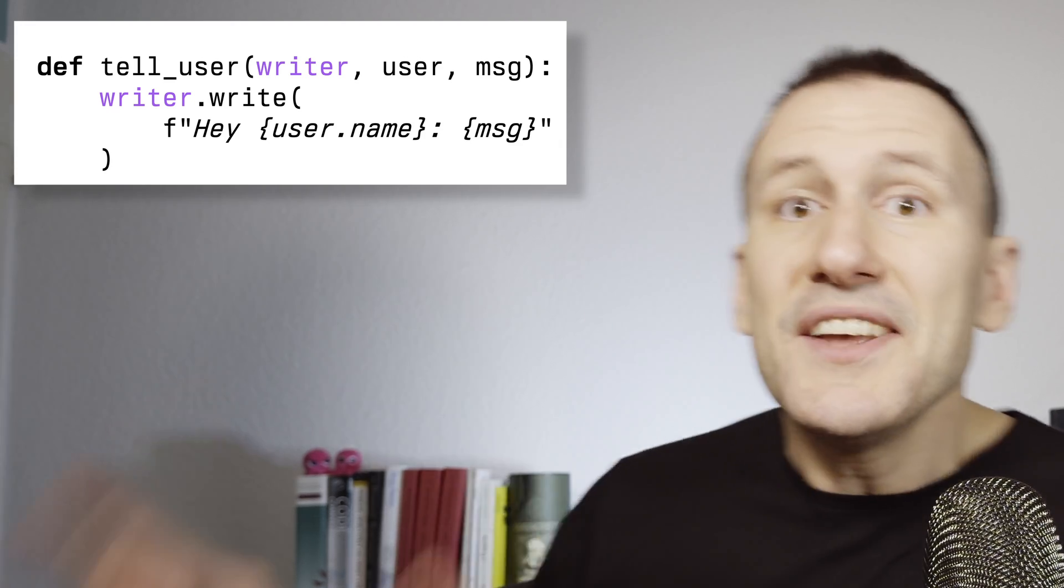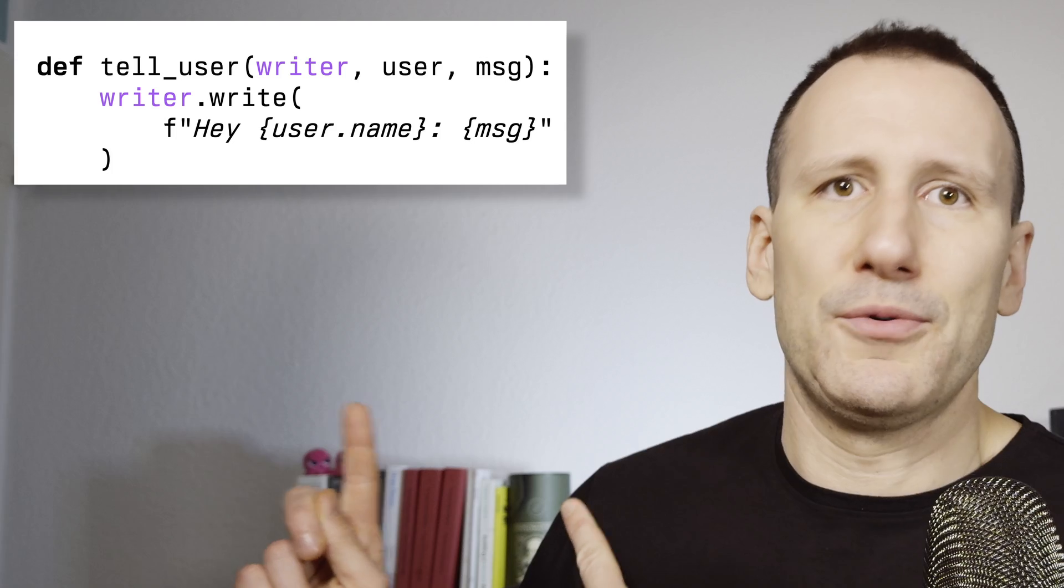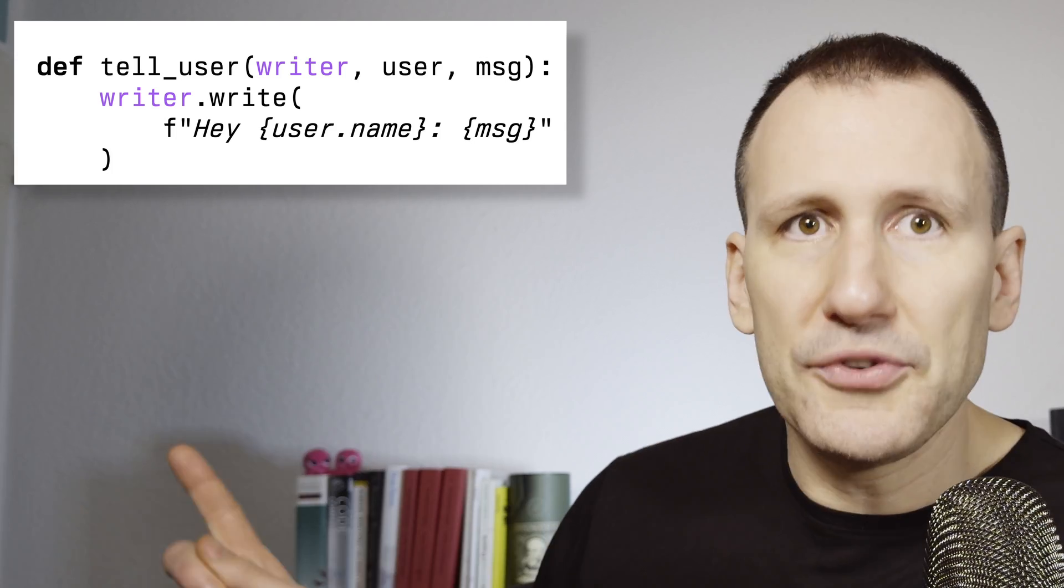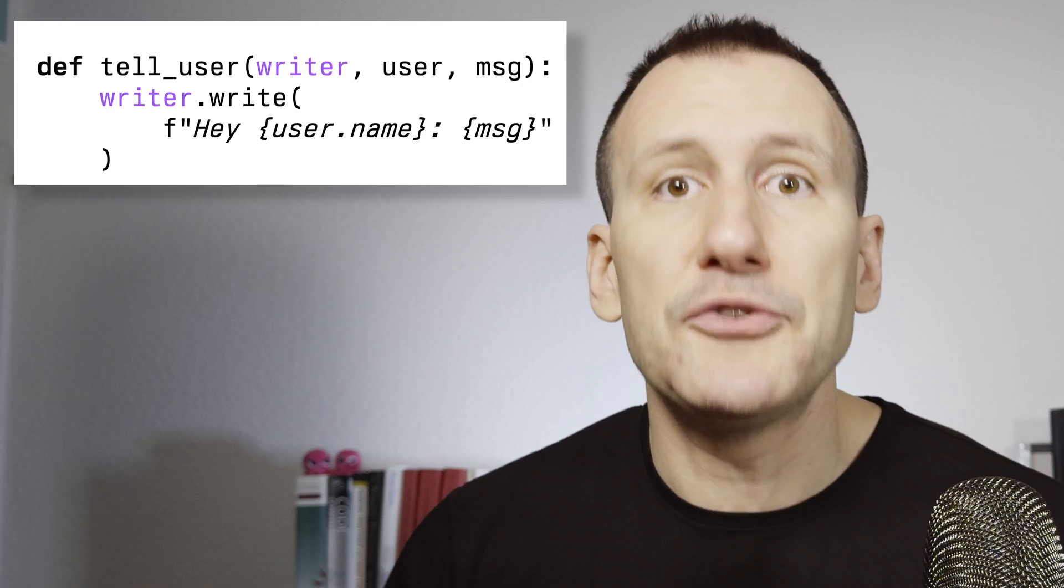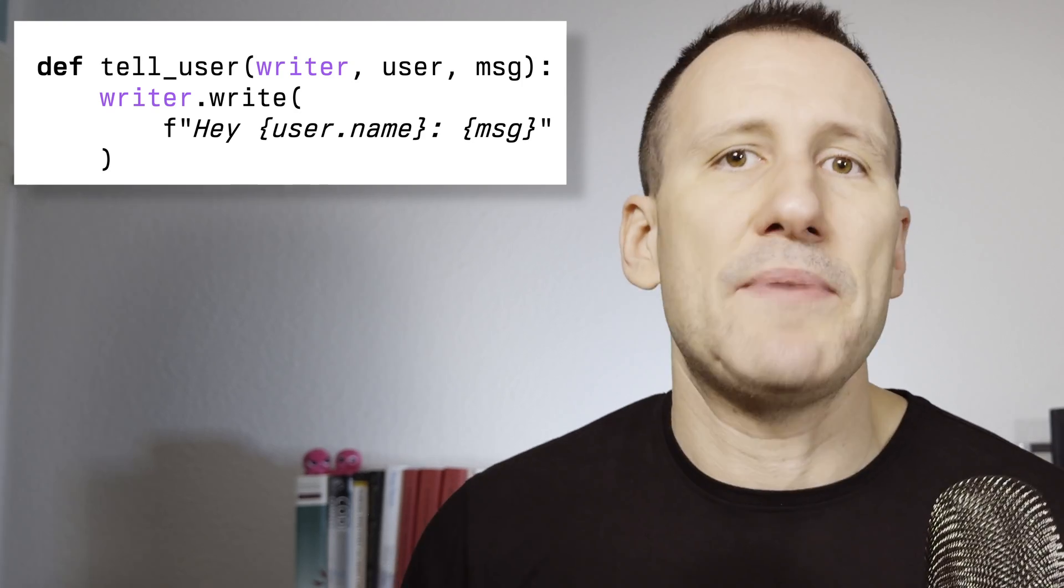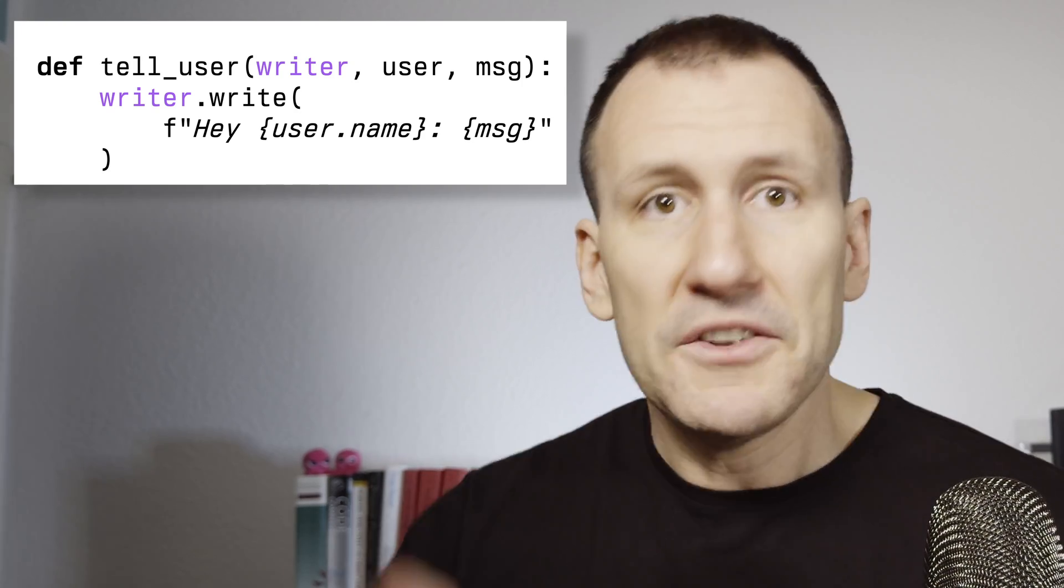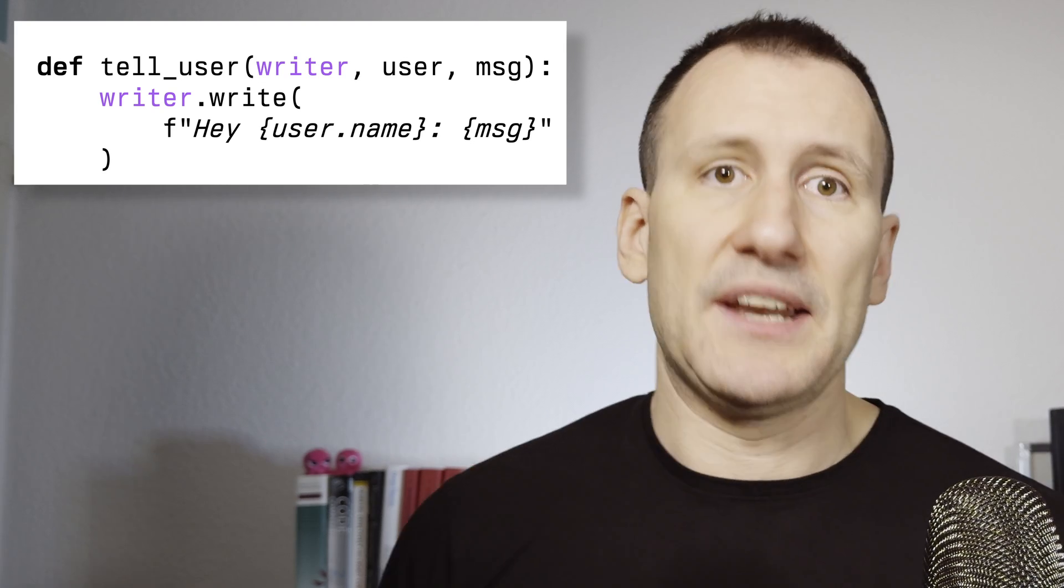Because one thing is clear. This is loose coupling. And this is the important part. The implementation of tell user is not coupled to the implementation of writer. It's only coupled to an API and a very narrow API at that. And this is the golden goal. This is good. They can be tested and reused independently.